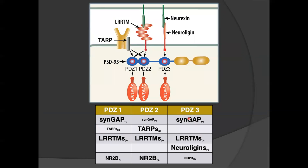SYNGAP is not the only PDZ ligand-containing protein in the post-synaptic density, but it is highly abundant and it can bind to all three of the PDZ domains — although it doesn't have the same affinity for all of them. It will bind PDZ1 and PDZ3 better than the others. Other PDZ ligand-containing proteins have the same differences in affinity for different PDZ domains, and some proteins don't bind some of the PDZ domains. So each PDZ domain of PSD-95 represents a situation of dynamic competition in the post-synaptic density for binding sites.